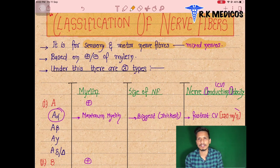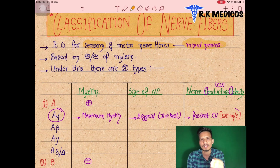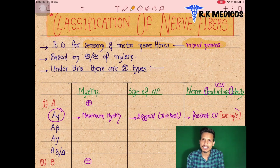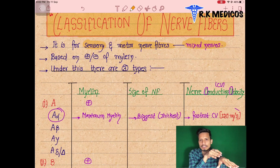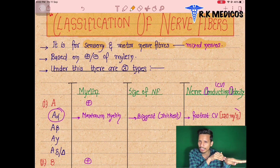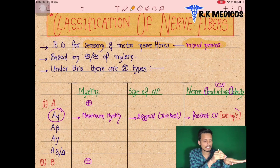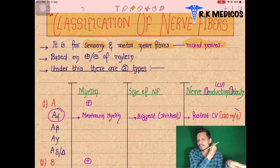It is simple: the fibers that are either collecting or sending information are mixed. The collection of information may include touch, temperature, cold, pressure, vibration — all this information is collected via impulses by the nerve fibers and carried to our central nervous system to be recognized.